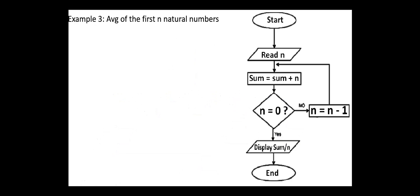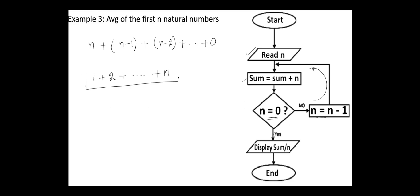The next example is to find the average of the first n natural numbers. We initialize a sum, then we add to it n, then n minus 1, n minus 2, etc., until we reach 0. We first read the number n and add n to the sum. If n is not 0, we decrement n and loop again, so the next n will be added to the sum. This loop is repeated until n becomes 0. In this case, we display the sum over n, which is the average of the first n natural numbers. As an exercise, you can draw the flowchart to find the sum by starting from 1 to n.